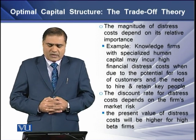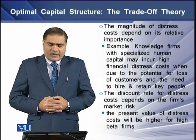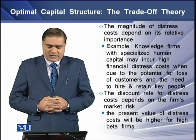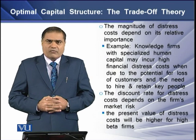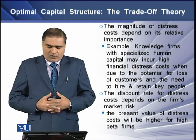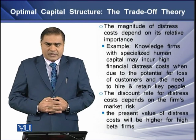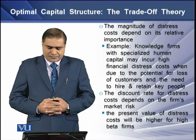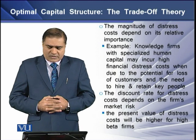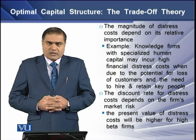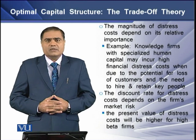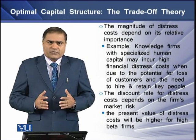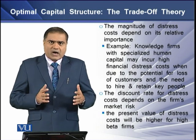The second factor is the magnitude of the distress cost, which depends upon its relative importance. For example, knowledge-based firms with specialized human capital may incur higher financial distress costs due to the potential loss of customers and the need to hire and retain skilled key persons. The third factor is the discount rate used for distress cost, which depends upon the firm's market risk. The present value of distress cost will be higher for firms that have higher beta.